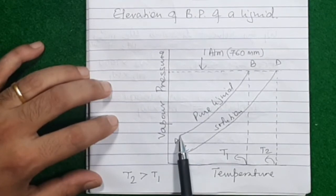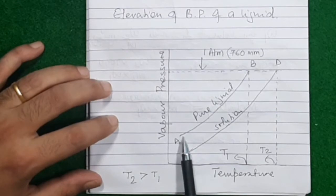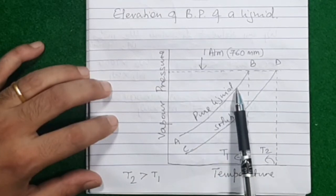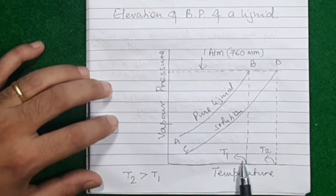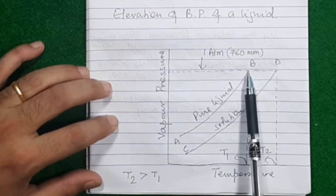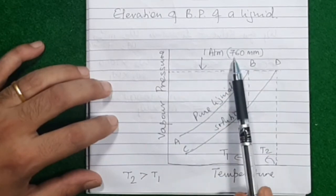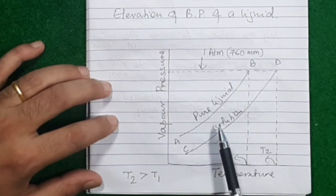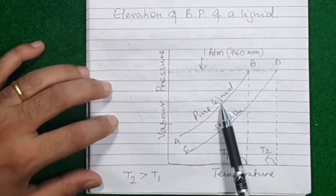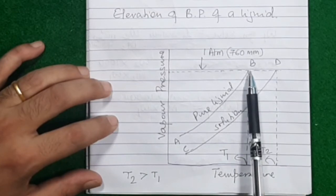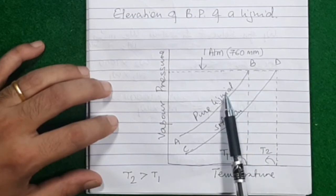When you start heating this pure liquid, temperature rises and vapor pressure also starts rising. If you keep on heating, vapor pressure keeps rising until it becomes equal to the atmospheric pressure — the normal atmospheric pressure of 760 mm. The pure liquid is continuously heated and its vapor pressure is rising.